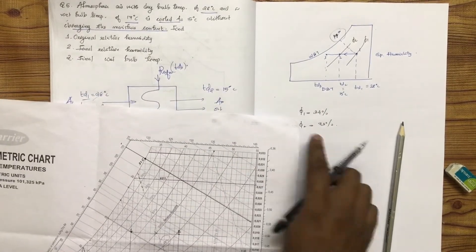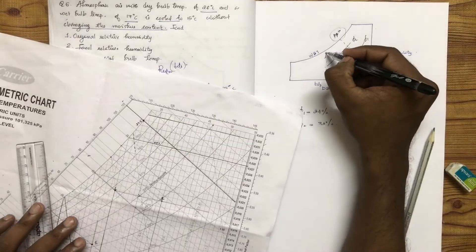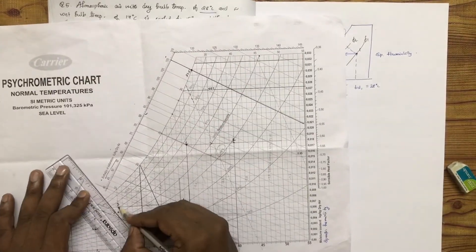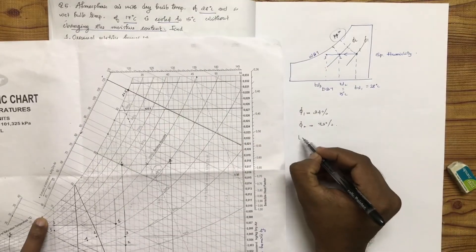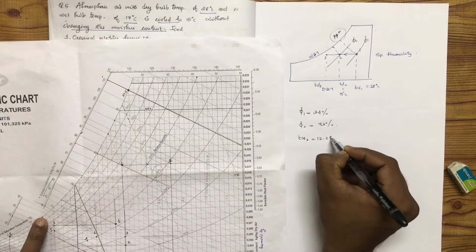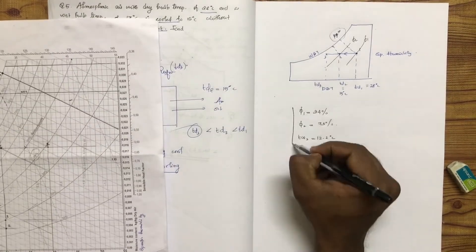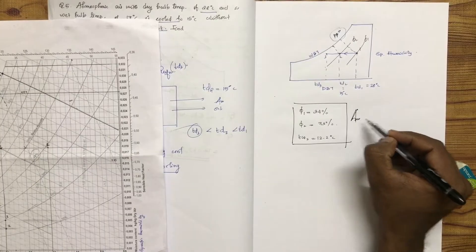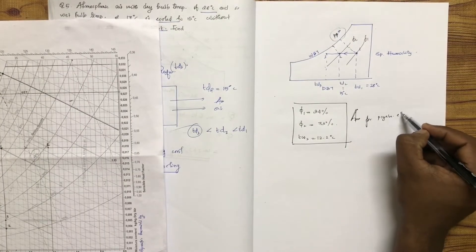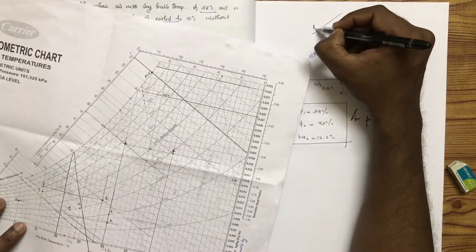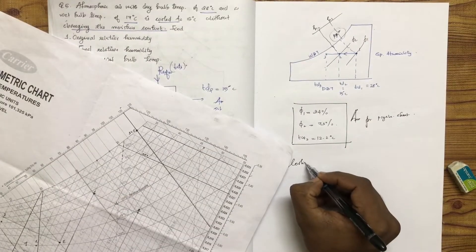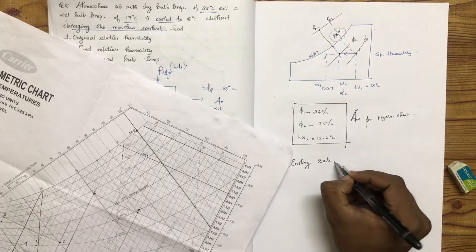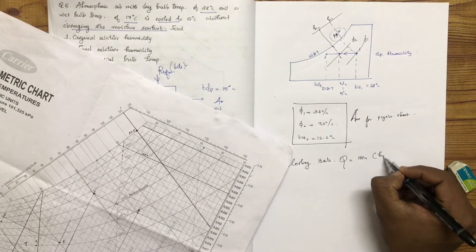The final wet bulb temperature TW2, which is equal to 12.2 degrees Celsius, is read from the psychrometric chart. Moving on, we will discuss the sensible cooling heat rate. The cooling rate is q equals ma into h2 minus h1, where we find H1 and H2 from the chart.